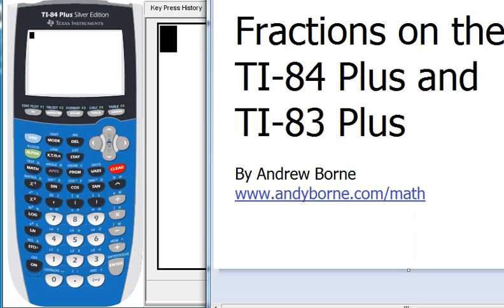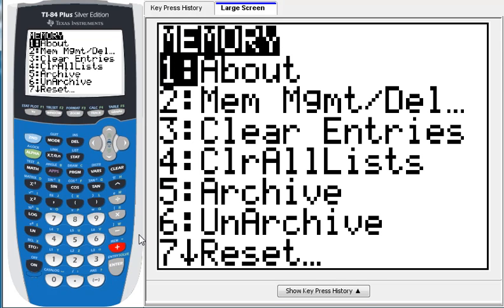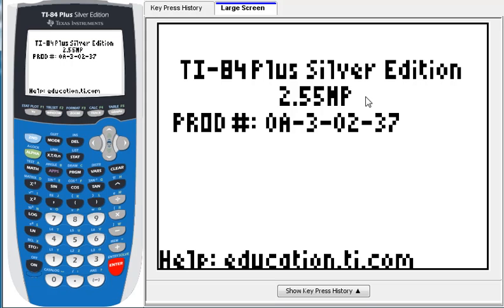All right. First things first. Look over here on the left side of the screen, press second and then the plus symbol on your keypad. The last key I press is red, so kind of watch that. And then choose number one, about. This is not going to work unless your calculator is upgraded to the most recent version. 2.55 MP or higher will do fine.